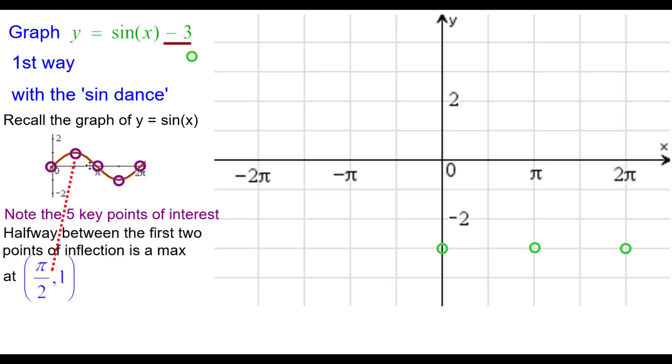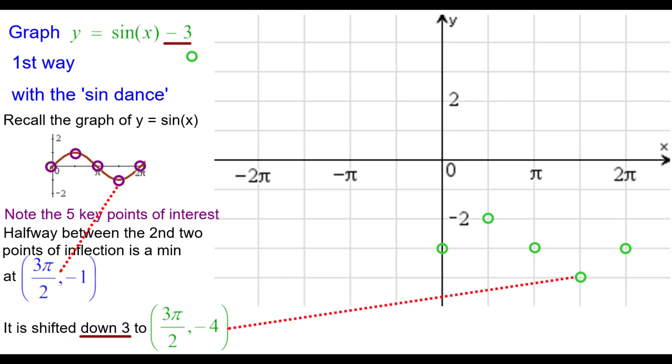Halfway between those first two points of inflection is a max, normally at pi over 2, 1. But we're going to shift down 3 to pi over 2, negative 2. Plot that one. And then finally, the minimum at 3 pi over 2, negative 1 is going to go down 3 units to 3 pi over 2, negative 4. And so we'll plot that. Pause as needed.